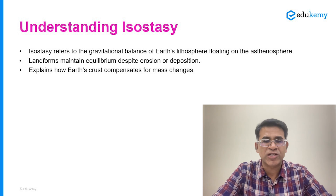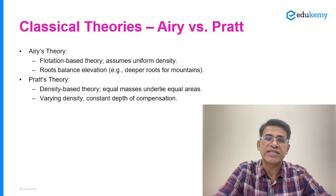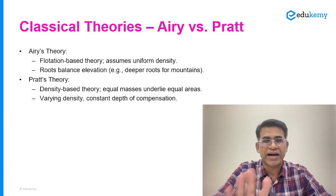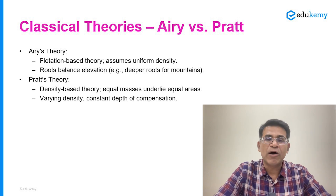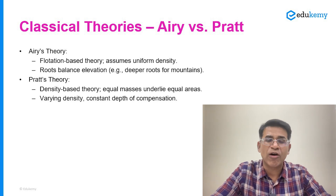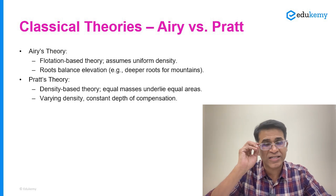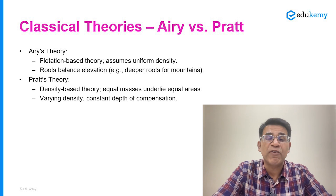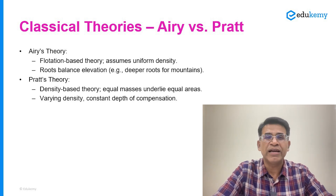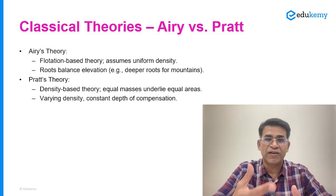Irrespective of whatever question they ask on isostasy, make sure you have a couple of lines on what Airy tells us and a couple of lines on what Pratt tells us. Pratt's idea is that equal masses underlie equal areas. It is about density varying across different landforms, and there is a common plane of compensation where all the density variation disappears. Pratt is talking about how isostasy is a consequence of different types of material — a compensation theory in terms of density variations.